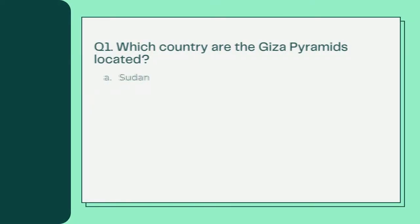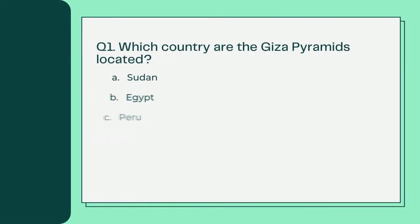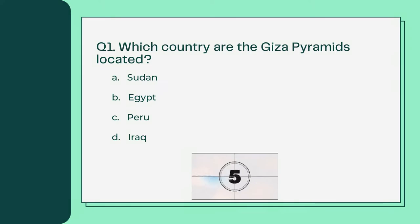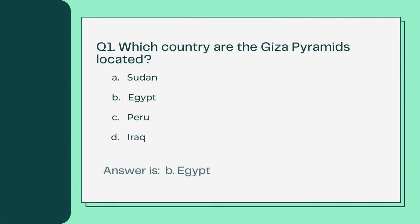Which country are the Giza pyramids located? A. Sudan B. Egypt C. Peru D. Iraq. Answer is B. Egypt.